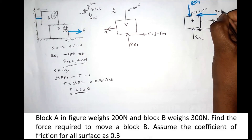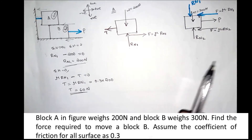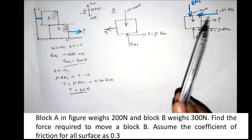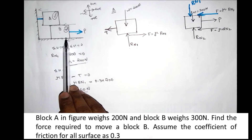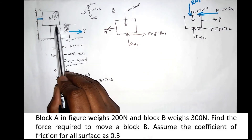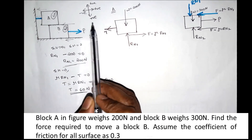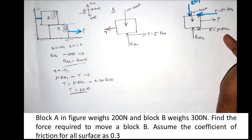The friction force equals mu into Rn1 (for the top surface) and mu into Rn2 (for the bottom surface). The coefficient of friction mu has the same value for all surfaces, which is 0.3.